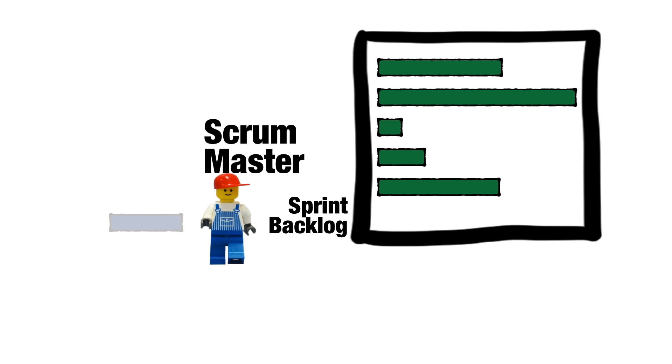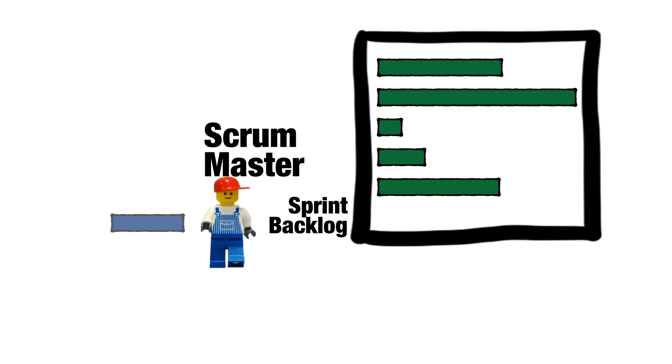Back to the question: can work be added to the Sprint Backlog during the course of the Sprint? Well, the answer is no — and it's yes. The Sprint Backlog is Scrum's way of limiting work in progress, and limiting work in progress is important for getting things done quickly with a minimum of context switching. So when Sprint Planning is over, the Sprint Backlog is locked down. Any attempt by anyone outside the development team to add new work into the Sprint Backlog should be vigorously resisted. In fact, it's one of the Scrum Master's key roles to protect the Sprint Backlog from external influence.